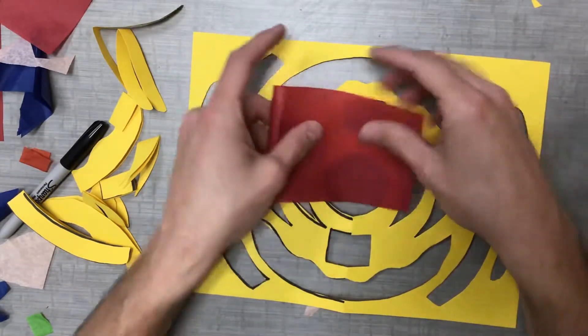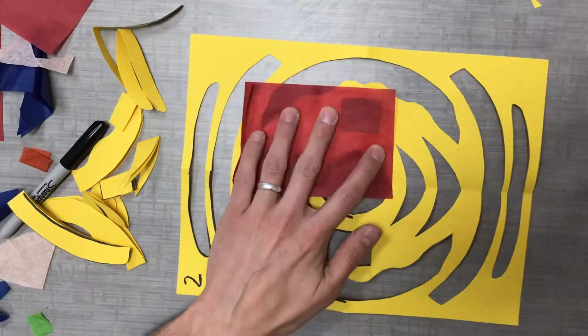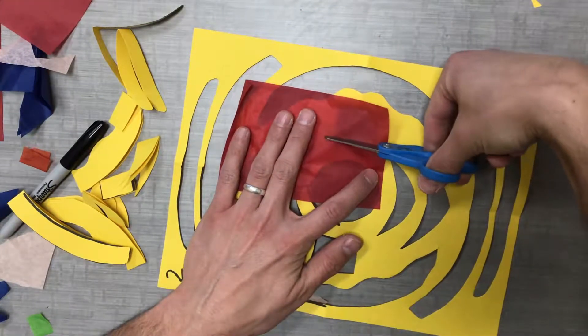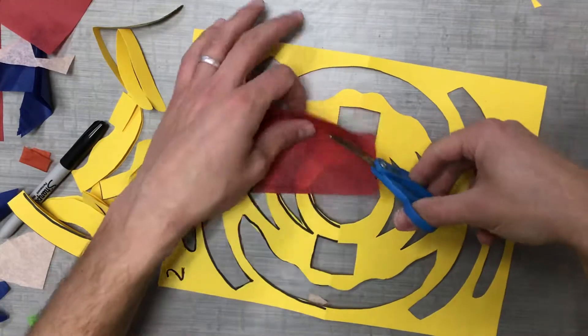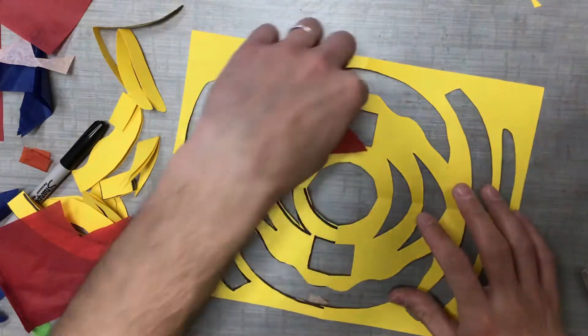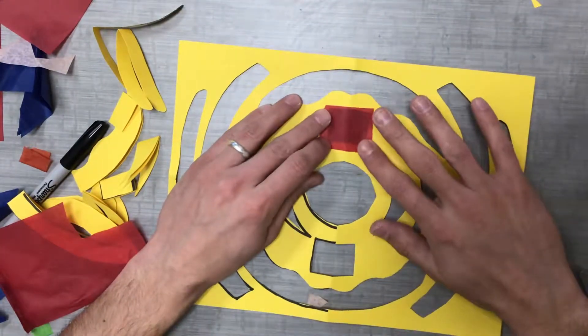So I'm going to start off here with this square and I'm going to cut the tissue paper just a little bit bigger than the square. Let me see if it fits. Okay, it does fit.